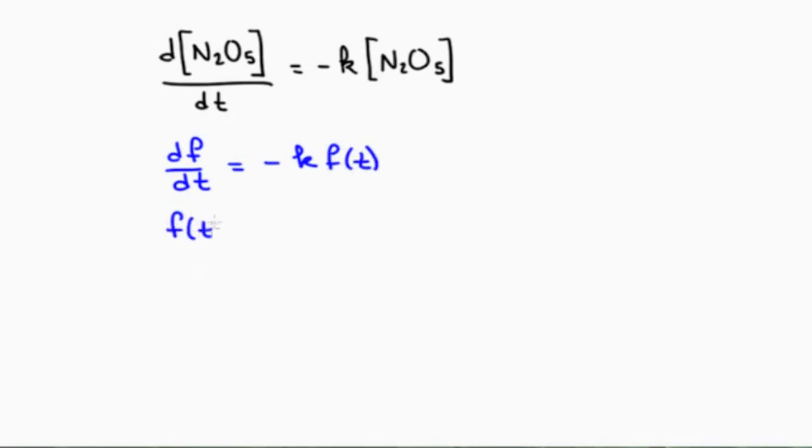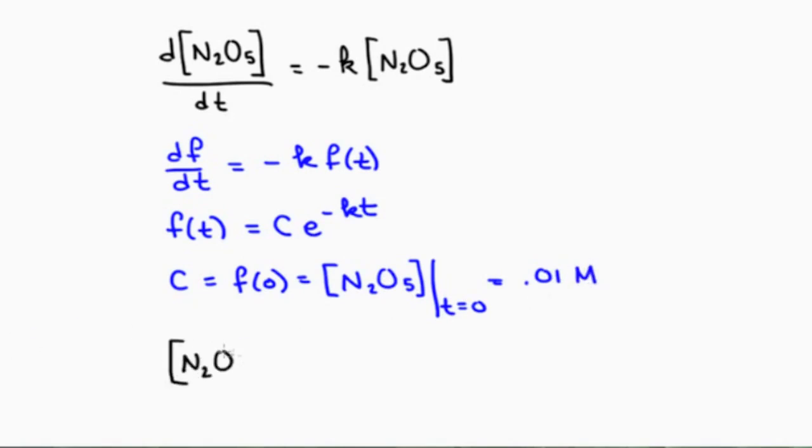So when you look back at the reaction rate, you realize that in fact a first order reaction rate is telling you that the concentration is some function of time whose derivative is proportional to itself. The function with this property is the exponential function. So the concentration function is equal to some constant times e^(-kt). The constant must be the initial concentration, which is 0.01 molar. So the concentration of N2O5 at time t is equal to 0.01 × e^(-kt).